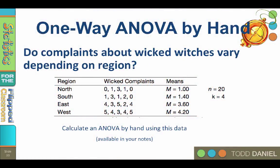So let's begin with our data. We can see that there are four regions: North, South, East, and West. We have the data for the number of wicked witch complaints from each region and the means for each region. 20 munchkins were surveyed, so that is our sample size. The number of regions is four, so that is k.